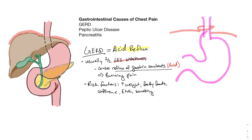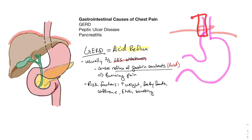The reflux of gastric contents — mostly acid — causes this burning type pain. Acid reflux might seem like no big deal, but if the esophageal cells are repeatedly damaged over time, they can change their cell type to protect themselves. This change can cause Barrett's esophagus, and if that continues for a long time, it can eventually lead to esophageal cancer. It's important to treat GERD and modify the factors that cause reflux to begin with.